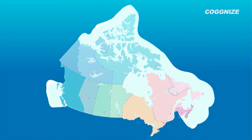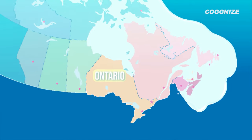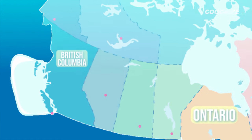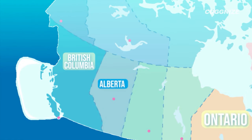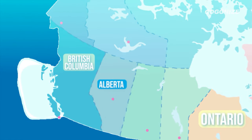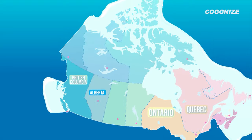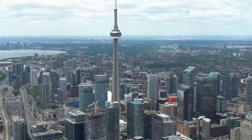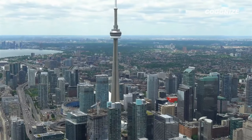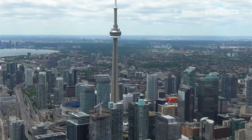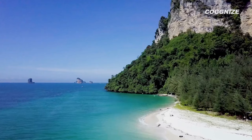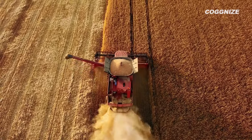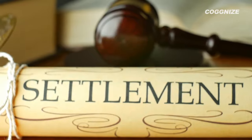Of these, four provinces — Ontario, Quebec, British Columbia and Alberta — account for over 80% of the Canadian population. These provinces are located in the southern part of the country, where the climate is more temperate and the land is more suitable for agriculture and settlement.